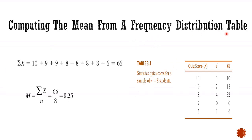Now how to compute the mean from a frequency distribution table? A quiz score is given and frequency is given. We will multiply the quiz score into the frequency: 10 into 1 is 10, 9 into 2 is 18, 8 into 4 is 32, 7 into 0 is 0, 6 into 1 is 6. Total comes to 66. So mean is 66 by 8, sum of x upon n. In this way we can calculate the mean from a frequency distribution table.